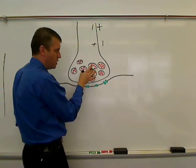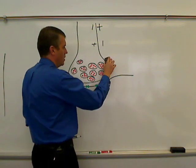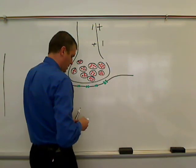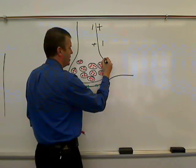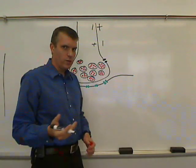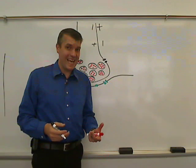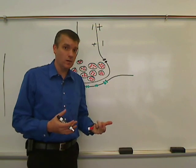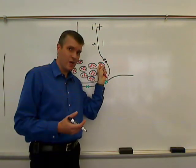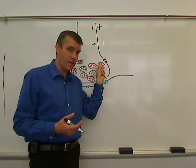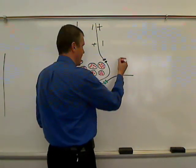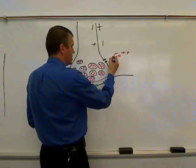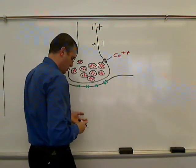The effect of that charge change reaching the axonal bouton causes voltage-gated calcium channels in the membrane to open. Remember voltage-gated sodium channels and voltage-gated potassium channels from action potentials? This is another type of voltage-gated channel. When that action potential comes down, the charge change inside of the cell stimulates this channel to open — but this channel is specific to calcium, Ca²⁺. So calcium diffuses into the cell, into the axonal bouton.